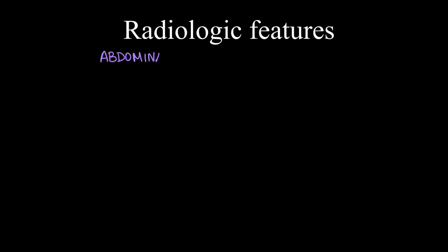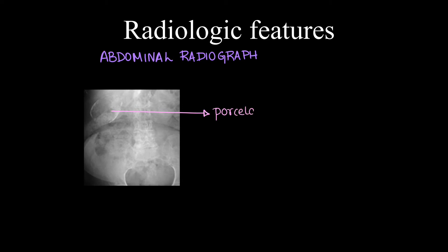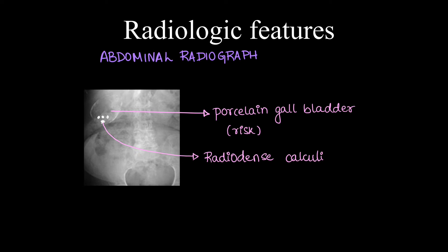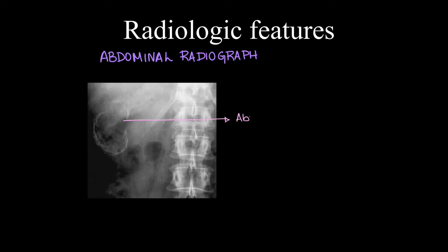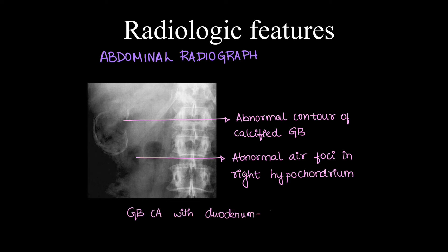Coming to radiological features: abdominal X-ray is the first modality where it can be detected incidentally, though it's not the modality of choice. We can see porcelain gallbladder, which is a risk factor for GB carcinoma, and radiodense calculi if present. An X-ray of a case of gallbladder carcinoma can show abnormal contour of a calcified gallbladder with abnormal air foci seen in the right hypochondrium, which can be due to gallbladder showing fistula with the duodenum.